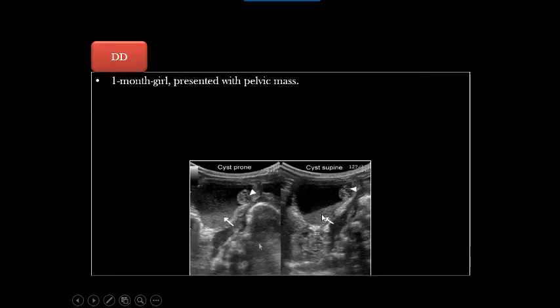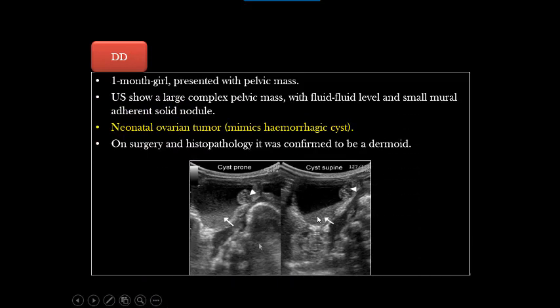The main differential diagnosis is teratoma. Like this case — a complex abdominal cystic lesion exactly resembling a hemorrhagic cyst with float-float appearance — but on surgery it was a dermoid. Remember: the most common abdominal mass in a female fetus or neonate is ovarian. Most cases are benign and need only sonographic follow-up. If complications appear — such as septations, float-float levels — MRI confirmation is needed to rule out torsion, or close sonographic follow-up is required. Thank you and assalamu alaikum.